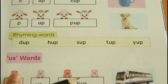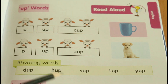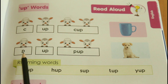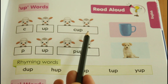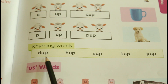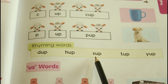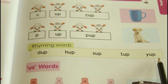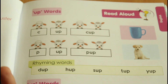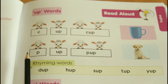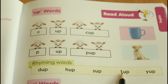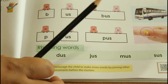Now the next word family: UP words. The first letters: C-up: cup. P-up: pup. And the rhyming words: dup, hap, sap, tap, yap. These are the rhyming words with the help of UP family words.